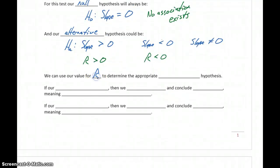We can use the value for R to determine the alternative hypothesis. Our conclusion will determine what we say about any association between these two variables.